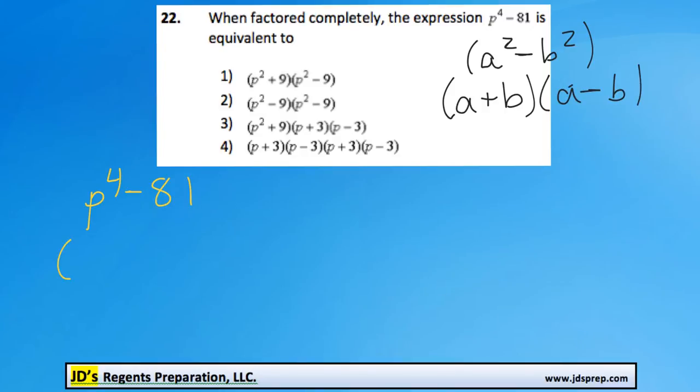So when we're factoring this one, we're looking for the square root of p to the power of 4, and that's p squared, because p squared times p squared would become p to the power of 4. And then the square root of 81, which is 9.